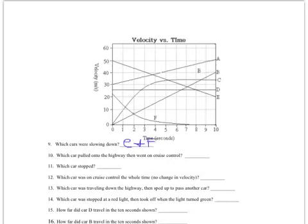Which car pulled onto the highway and then went on cruise control? That means it had to accelerate and then it settled off at about 35 meters per second, which is about 70 miles an hour. So that would be C. Cruise control means you continue at a constant velocity — your speed doesn't change, your velocity doesn't change.